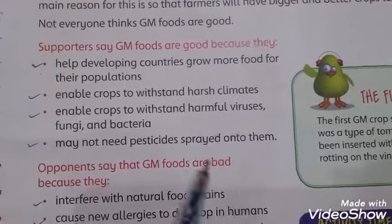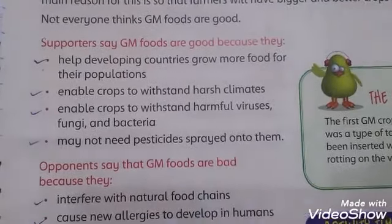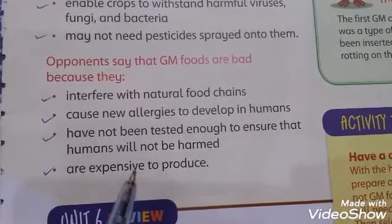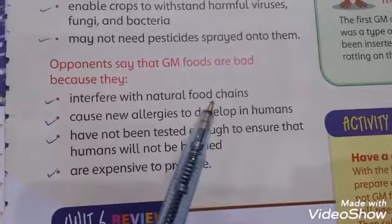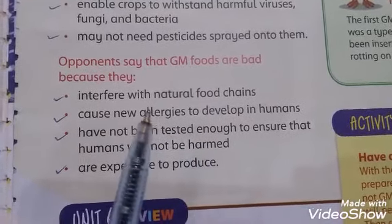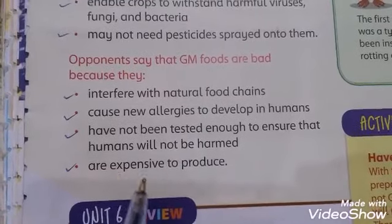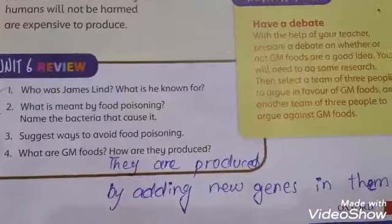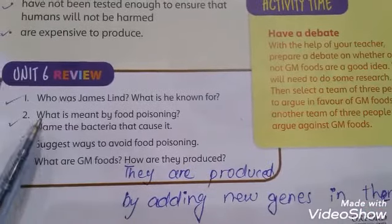Opponents, those against GM foods, say that they interfere with the natural food chain, can also cause allergies, and are very expensive to reproduce. Now on page number 59, some review questions and answers.